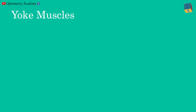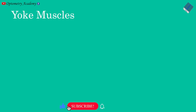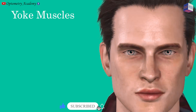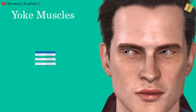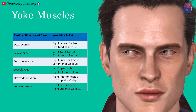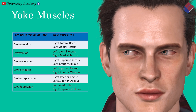Let's move on to yoke muscles. It refers to a pair of muscles, one from each eye, which contract simultaneously during version movement. For example, right lateral rectus and left medial rectus muscles act as yoke muscles for dextroversion movement. The yoke muscle pairs for the six cardinal positions of gaze are listed in the table.